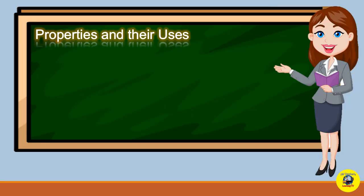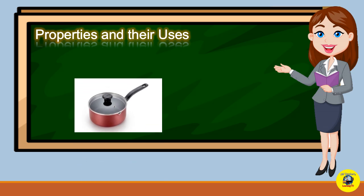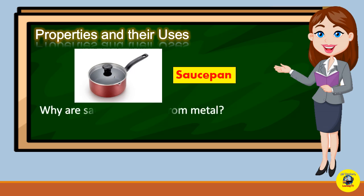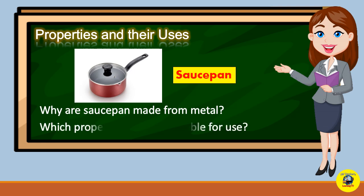Let's try to go over the properties and their uses. Can you name the picture? Correct! It's a saucepan. Why are saucepans made from metal? Which properties make it suitable for use?